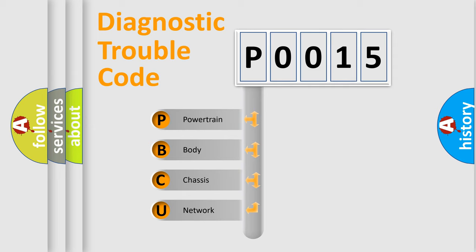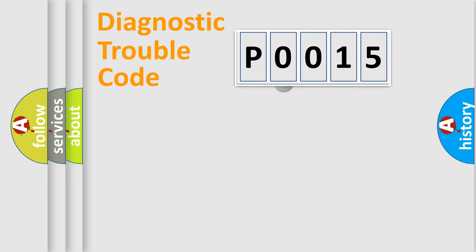We divide the electric system of automobiles into four basic units: Powertrain, Body, Chassis, and Network. This distribution is defined in the first character code.